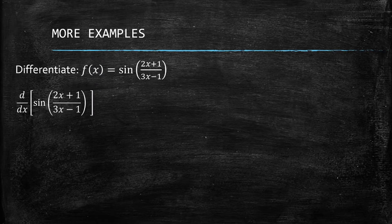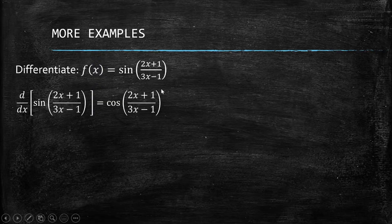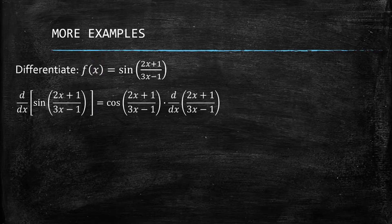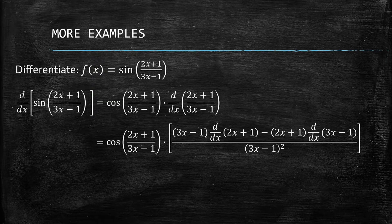We differentiate this and we know that the derivative of sine is just cosine. We simply copy whatever is inside the parentheses — whatever is the angle — and do not forget to get the derivative of whatever is inside the parentheses. That's why we have d/dx of (2x + 1) all over (3x minus 1).